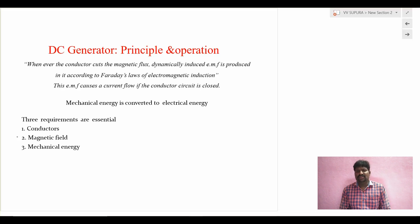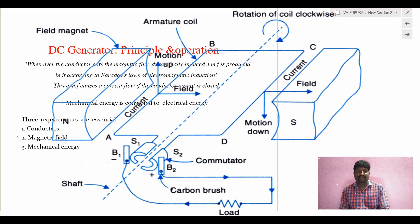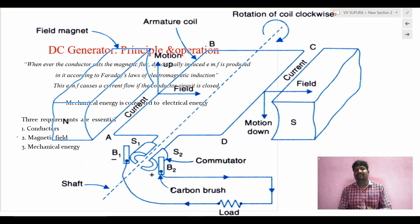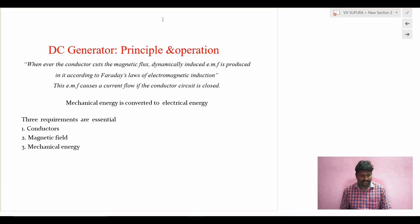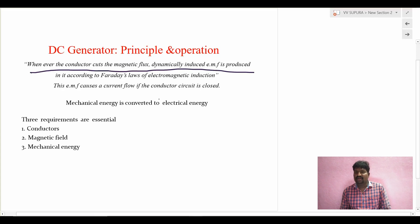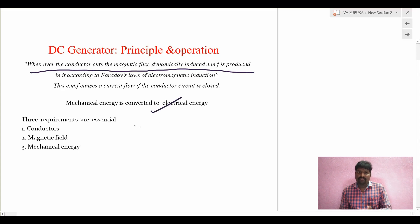Now let's discuss about the DC generator. The main principle is it converts mechanical energy to electrical energy. According to Faraday's law of electromagnetic induction, whenever a conductor cuts the magnetic flux, an EMF is induced in the conductor. This is the basic principle of a DC generator - or any generator. There should be a relative motion between the conductor and the magnetic flux. The conductor cuts the magnetic flux, EMF is induced, and this dynamically induced EMF is produced according to Faraday's law. Whatever EMF is induced in the conductor will cause the flow of current when the circuit is closed.